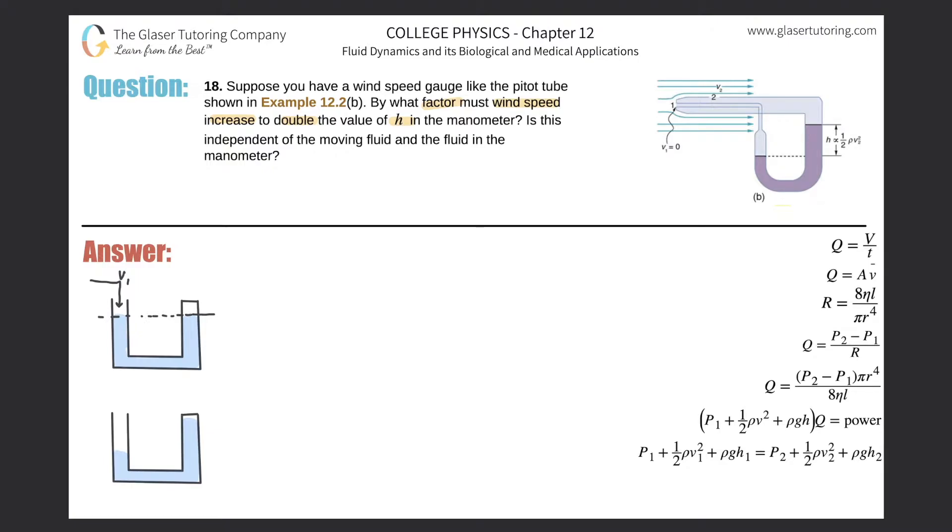Now what I can do is basically use Bernoulli's equation. Since I'm assuming that there is an equilibrium that is reached here, the pressure that is being imparted down here on the water will be equal to the pressure basically being pushed up on the water on the other side. This is my second case. This is my first case. What that means is that the pressures will be equal. So P1 and P2 are equal, so I can just cancel them out.